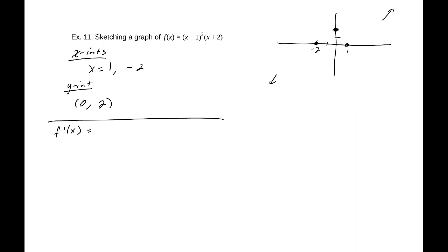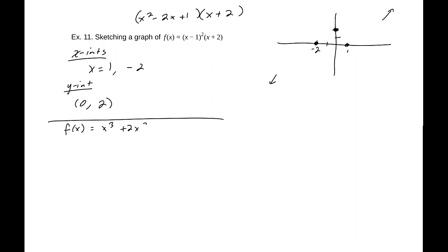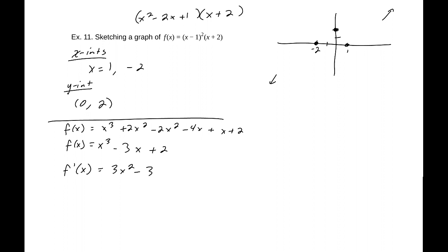If we treat this with the product rule, it might be easier to multiply it out. That gives x² - 2x + 1 times (x+2), which expands to f(x) = x³ - x² - 4x + x + 2, combining terms: x³ - 3x + 2. So f'(x) = 3x² - 3, which equals zero whenever x = ±1.